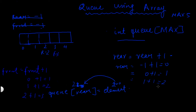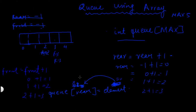Now inserting an element into the queue: the value of rear is incremented by 1. The value of rear is 2, so 2 plus 1 equals 3. Rear becomes equal to 3, and the new element will be inserted at position 3. Suppose the value of element is 50, so 50 gets inserted at position 3.